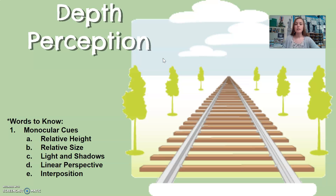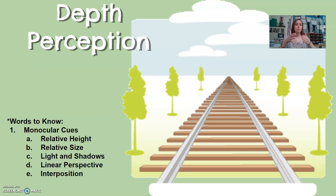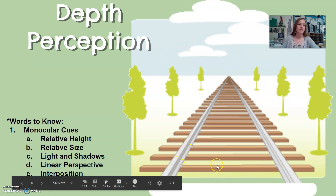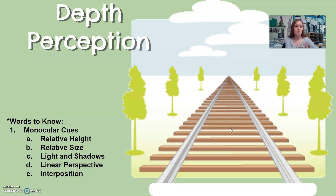The next depth perception monocular cue is called linear perspective. Linear perspective is when two parallel lines appear to converge in the distance, telling us that where the lines meet in the distance is farther away than the lines closer to us. Linear perspective is just another monocular cue where parallel lines appear to converge in the distance.